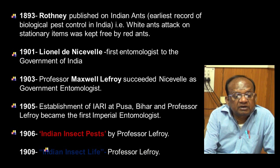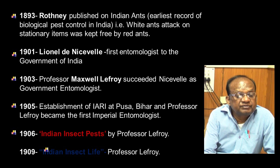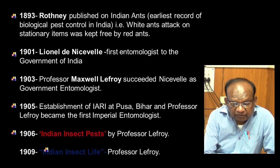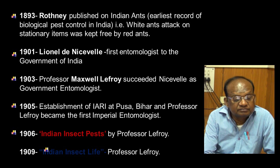In 1893, Rothney published on Indian ants — the earliest record of biological pest control in our country. White ants that attacked stationary items were controlled by red ants. This is the first example of biological pest control in our country, made by Rothney in 1893.